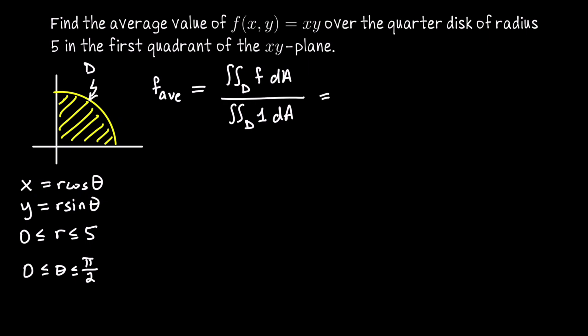Now if I convert this expression to polar coordinates, we're going to integrate from 0 to pi over 2, 0 to 5. x times y is r cosine theta r sine theta. And then in the conversion, we pick up an r, then dr d theta.